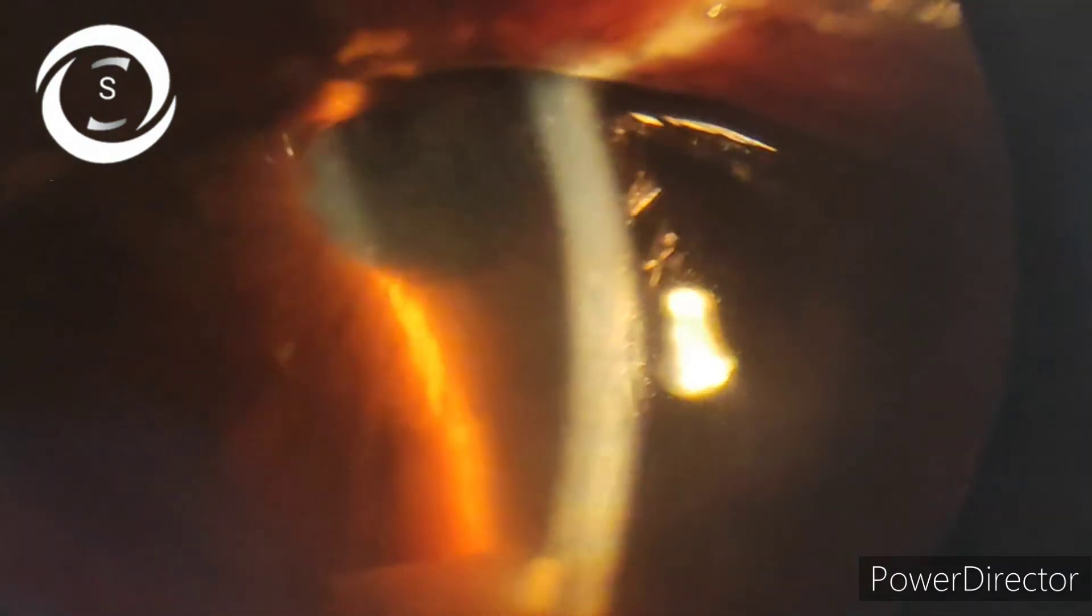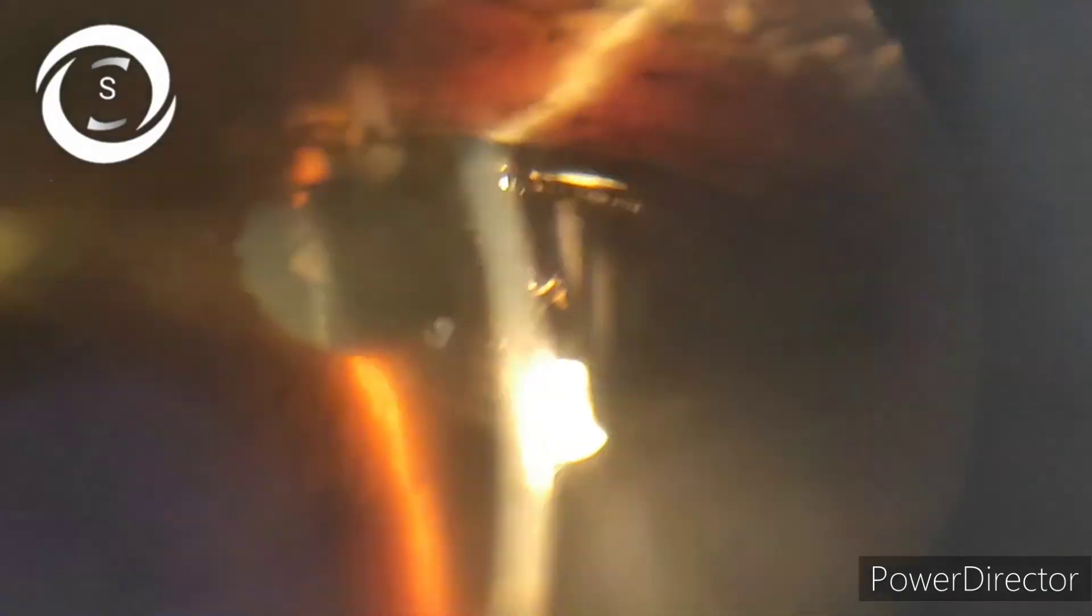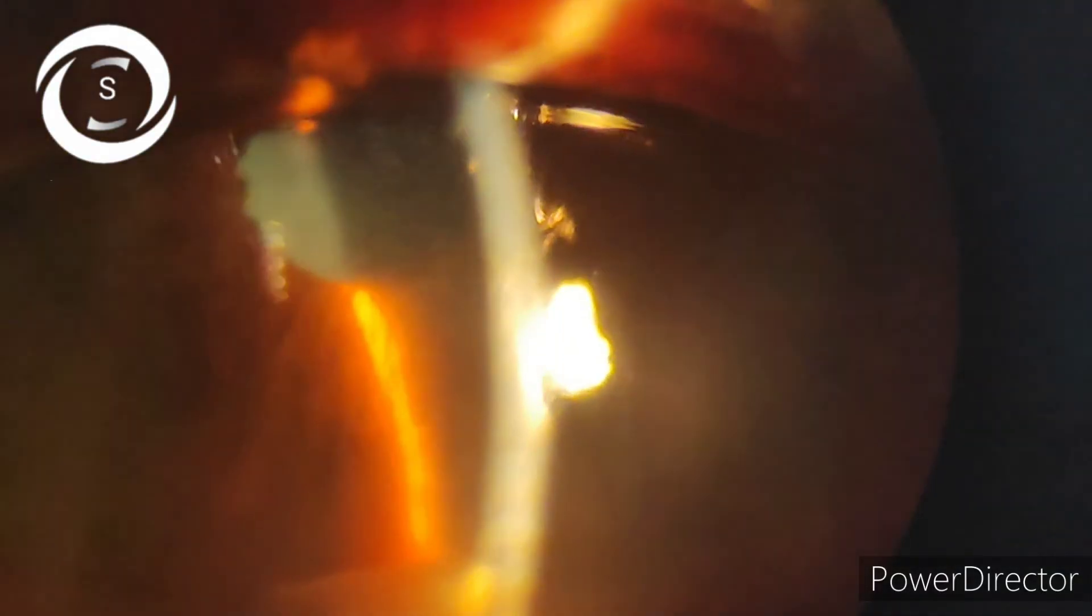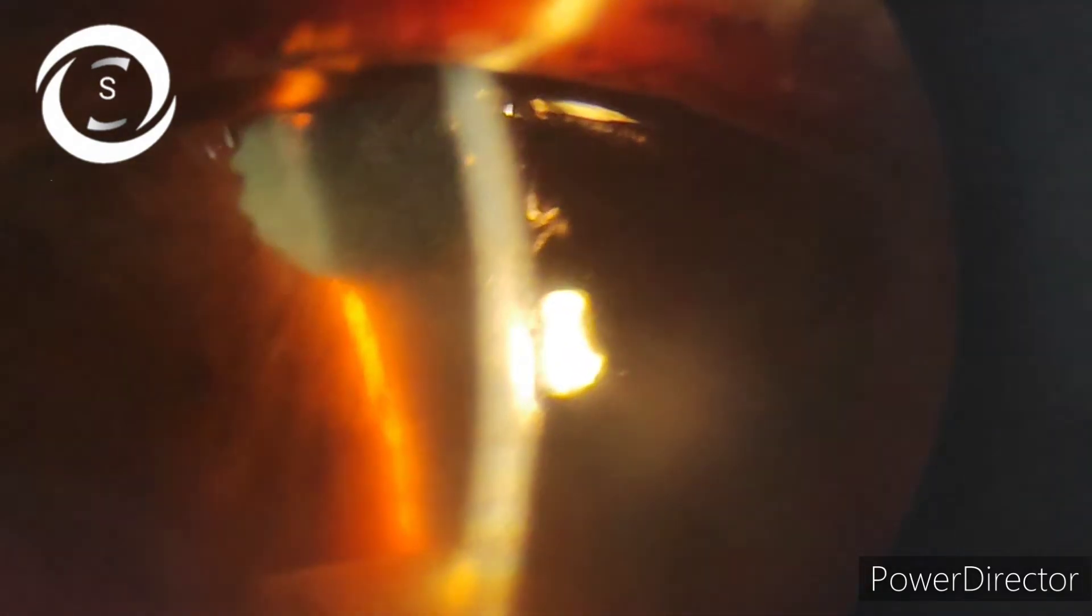She had a history of recurrent red eye and severe pain, photophobia, watering, and you can see inferiorly there is a hypopyon as well. But unfortunately she was treated for inferior keratitis. She was given moxifloxacin, gentamicin, tobramycin, antifungals, antibiotics and she was symptomatic.